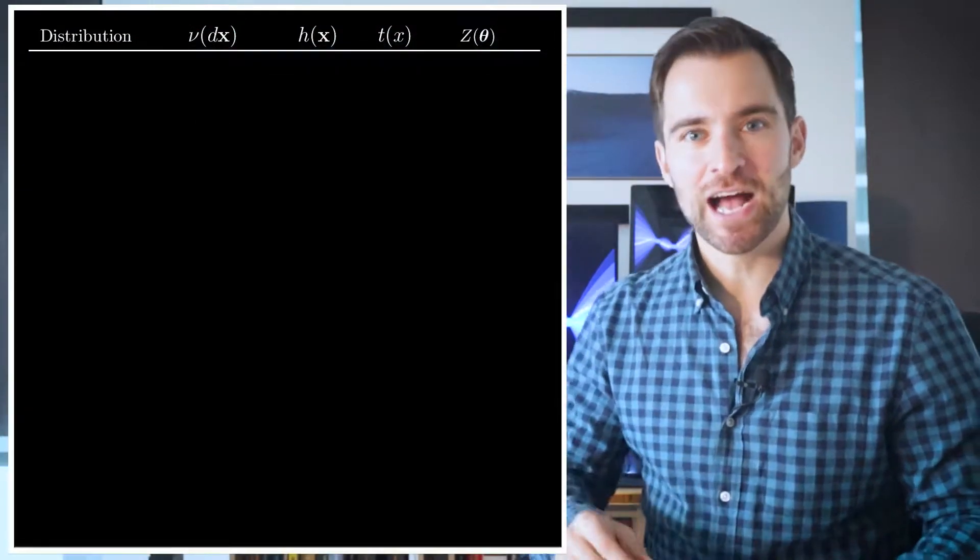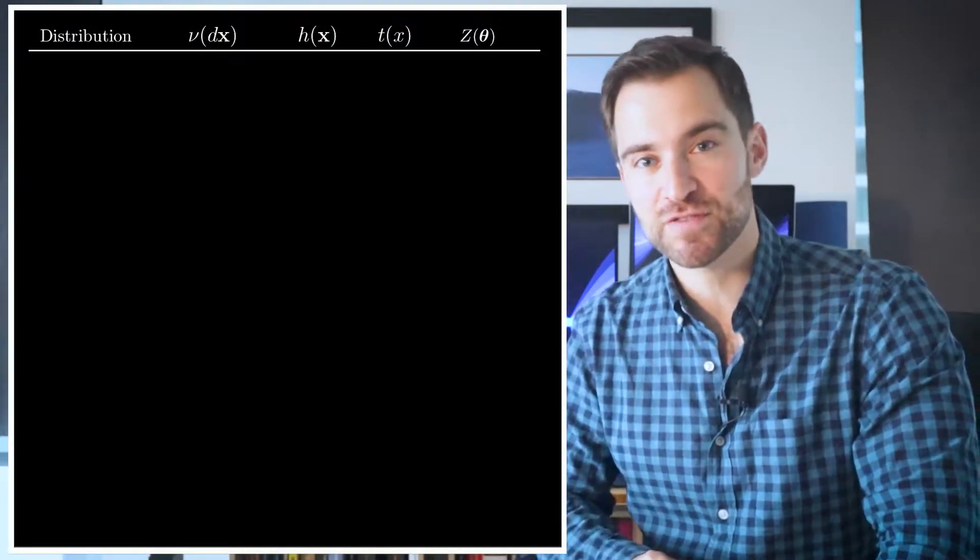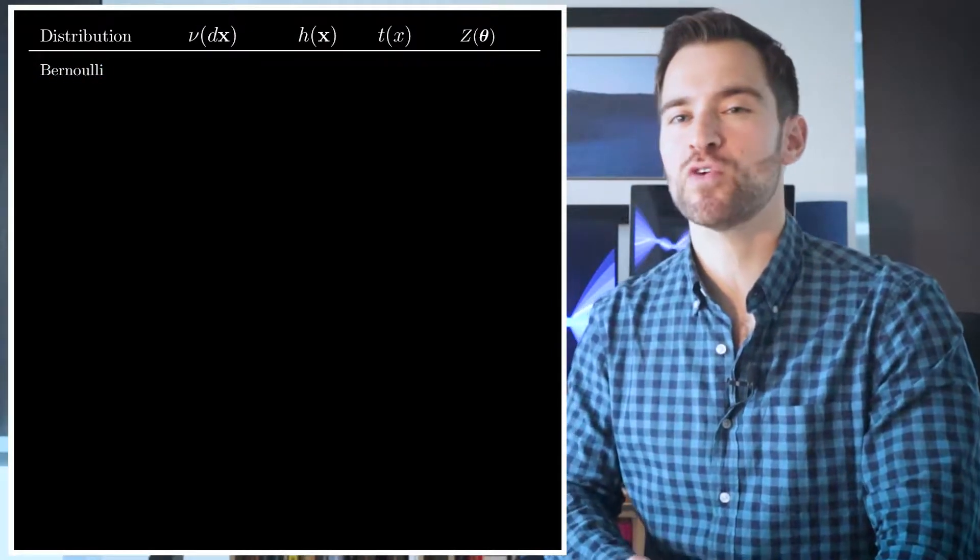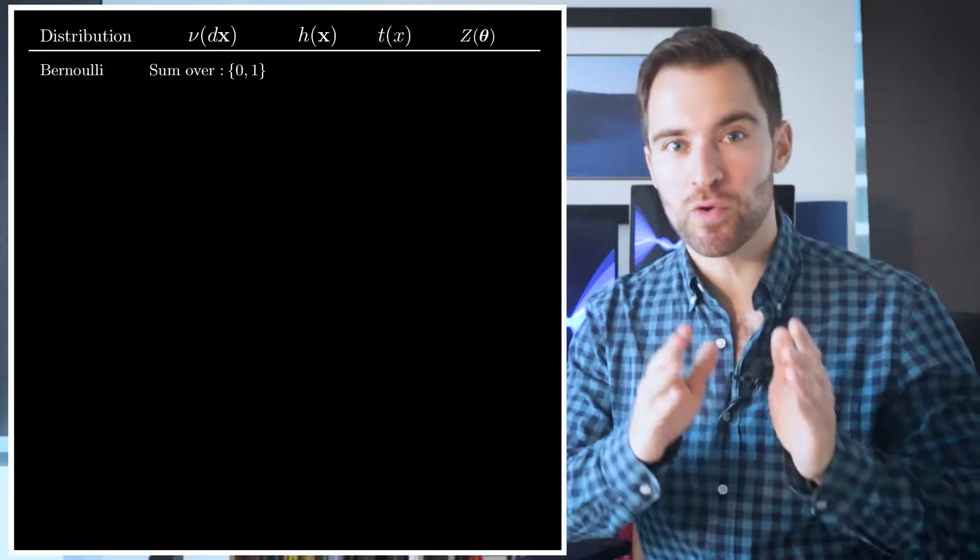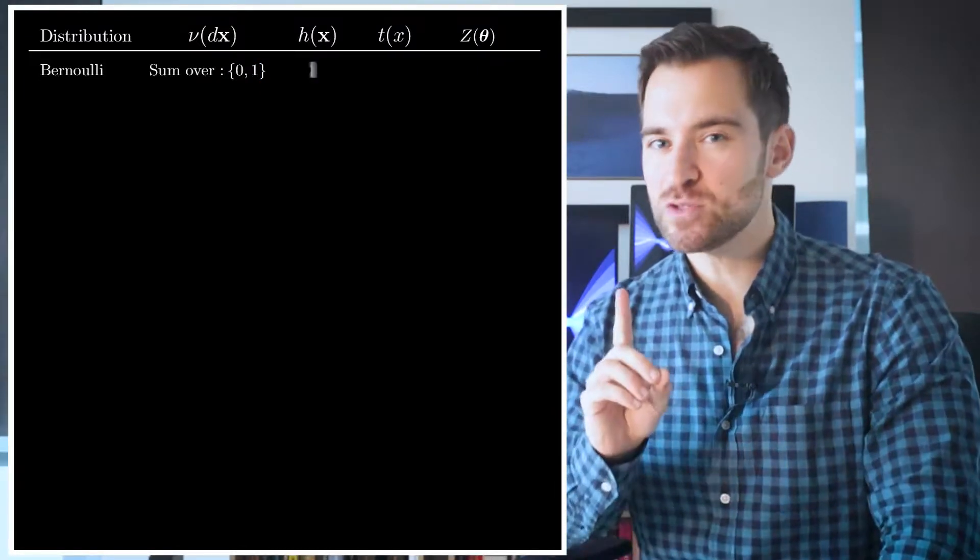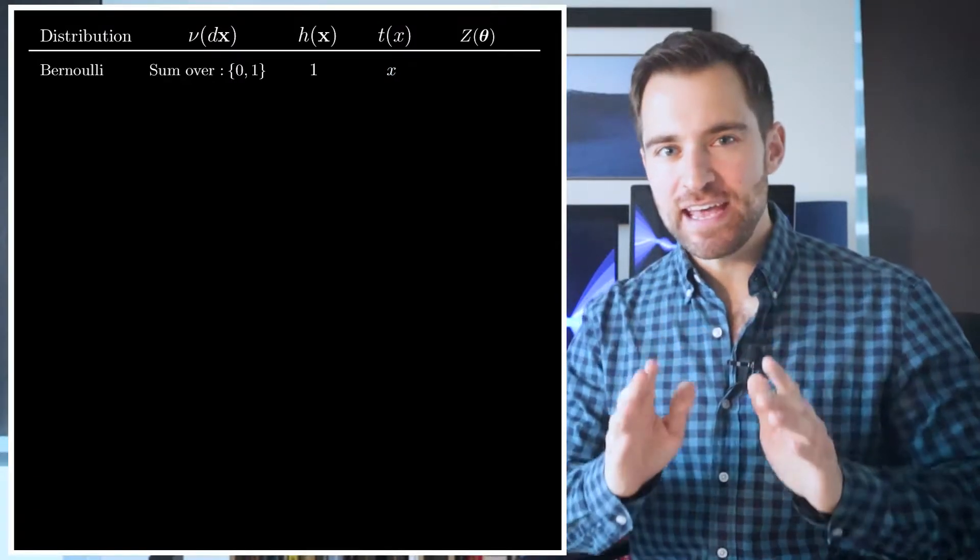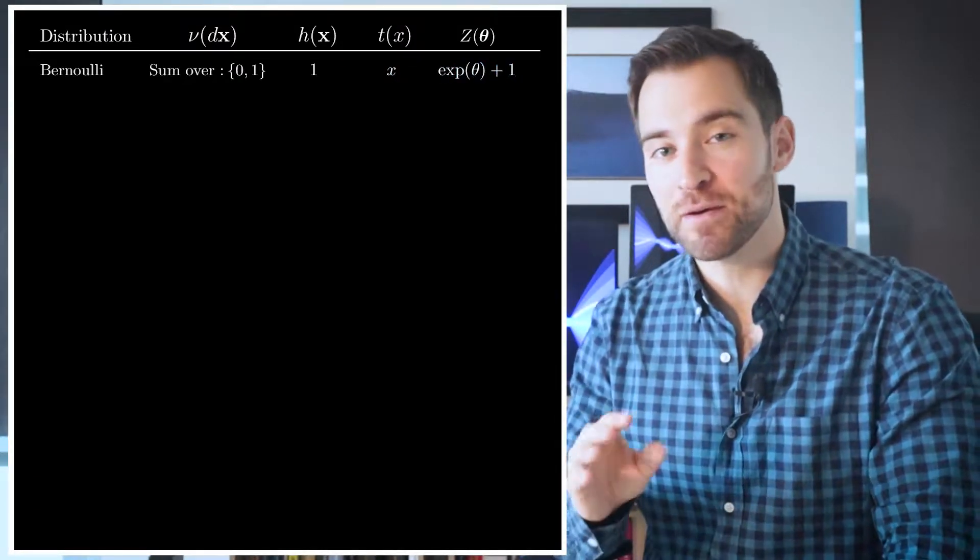Well, there are many. To communicate the first, I'm going to pick one of the simplest distributions from the family, the Bernoulli. In that case, the normalizer requires summing over only two values, either 0 or 1. h(x) is 1, and t(x) is just x itself.